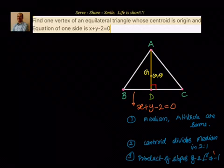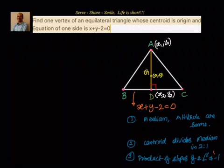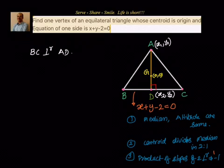To start with, let the coordinates of A be (x1, y1) — this is what we have to find at the end. Let us say that we don't know the coordinates of D, so we take it as (x2, y2). We are doing this because AD is the median, and also the altitude, and also the perpendicular bisector. So our first condition is that BC is perpendicular to AD.